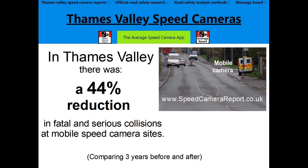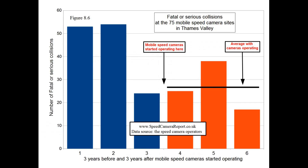But look at those collisions displayed on a graph. Now we can see when that reduction occurred, and it was here — a year before the camera started operating. So we know that the cameras did not cause that reduction because they simply weren't there when it occurred.